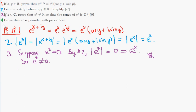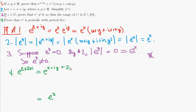Finally, number 4: let's prove that e to the z is periodic with a period 2πi. In other words, if we take e to the z plus 2πi, the claim is that this equals e to the z. By definition, this is equal to e to the x plus i y plus 2πi, and combining the imaginary part, that's e to the x plus i times y plus 2π.